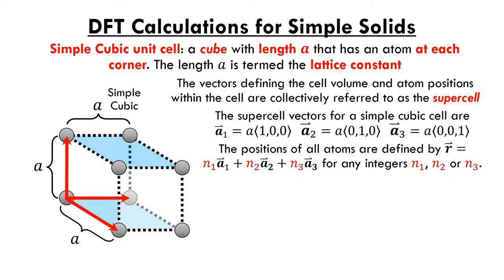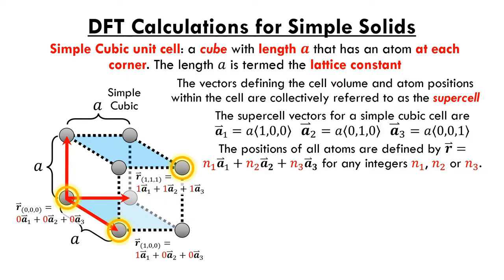The position of every atom in the crystal can be described through a linear combination of the vectors A1, A2, and A3: R = N1·A1 + N2·A2 + N3·A3 for any integers N1, N2, or N3. The most trivial example is the atom at the origin, obtained when N1 through N3 are all zero. Another example is the atom at position R100, obtained with coefficients 1, 0, and 0. The final example is the atom at position R111, obtained with coefficients 1, 1, and 1. I'll leave it to you to find all the positions of the other atoms in the supercell.